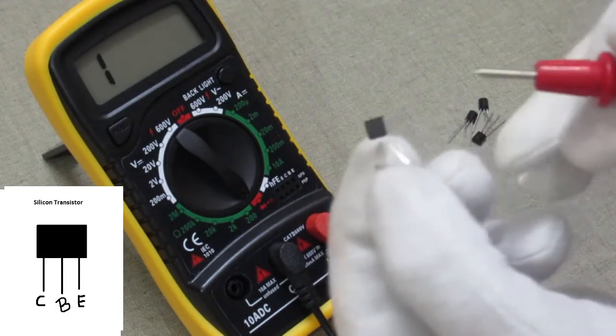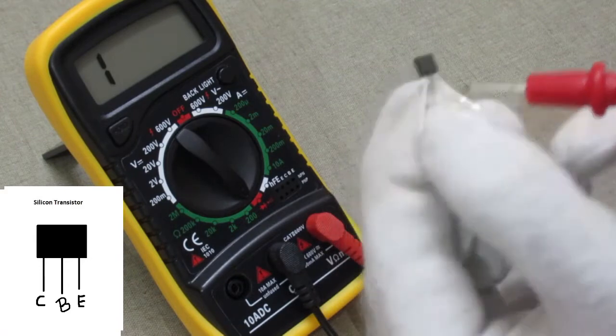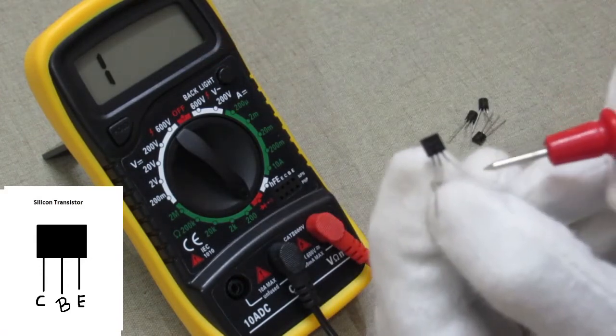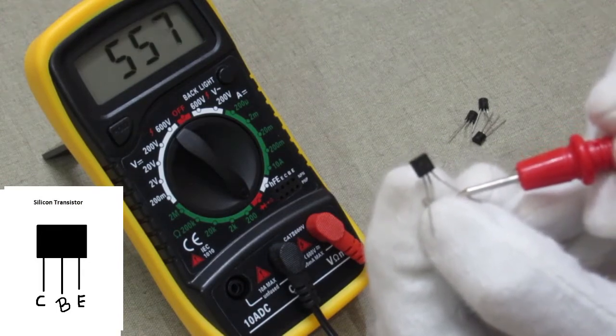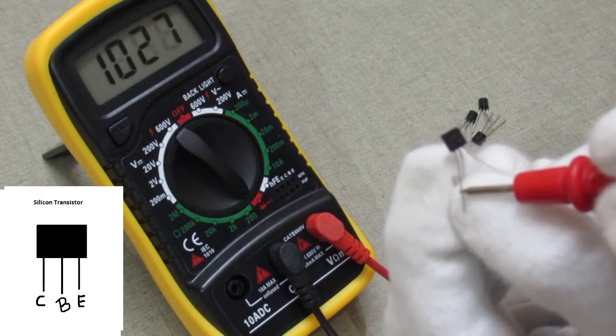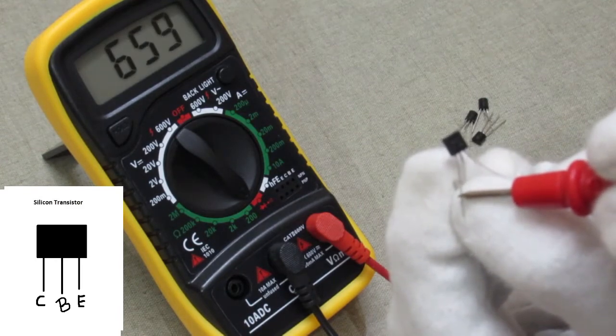Touch the black probe to the transistor base and red probe to the emitter. Multimeter showing some reading. Then test the probe to the transistor collector. This time multimeter showing some reading.